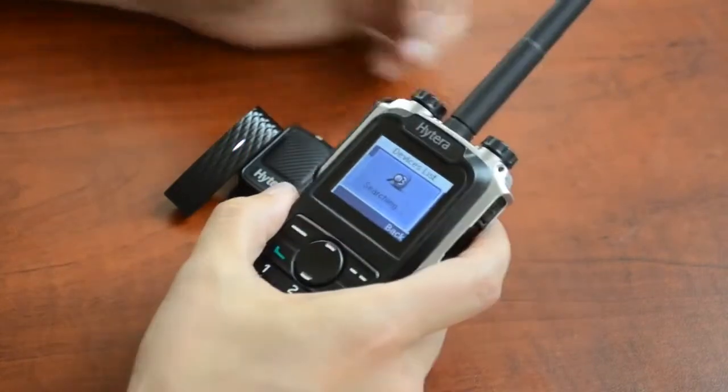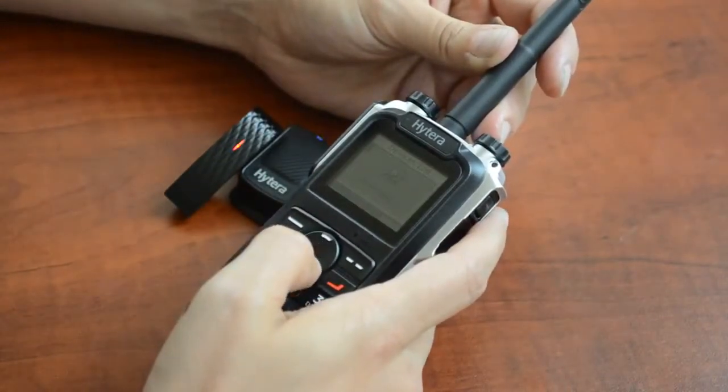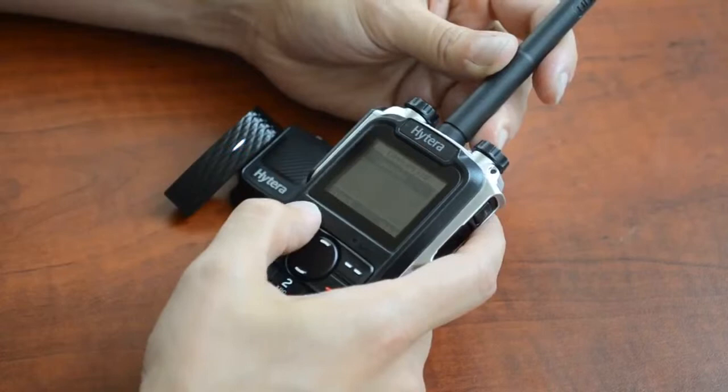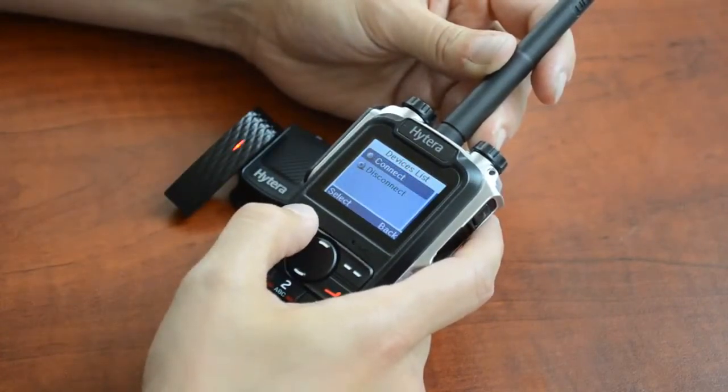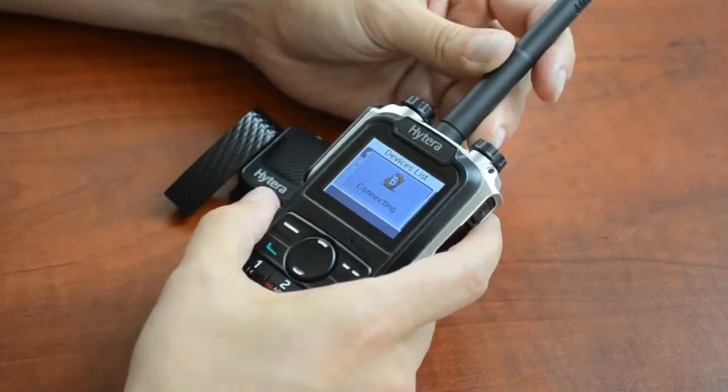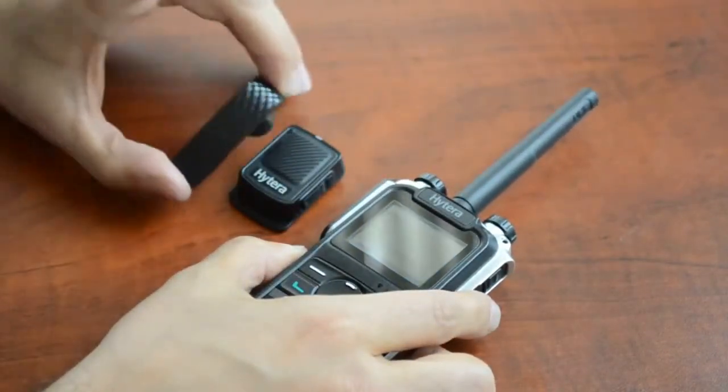Press select and it will search for the Jawbone accessory and it found it. So then you can select it and select connect. It's now connecting the X1P to the Jawbone headset.